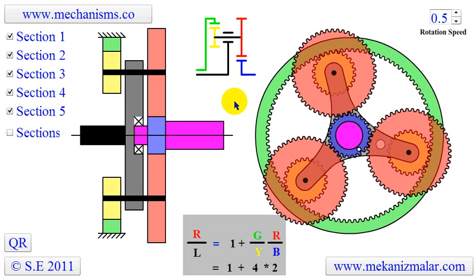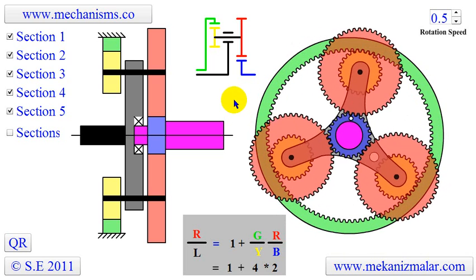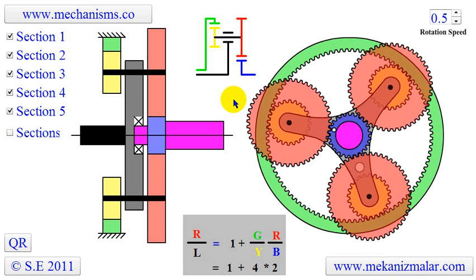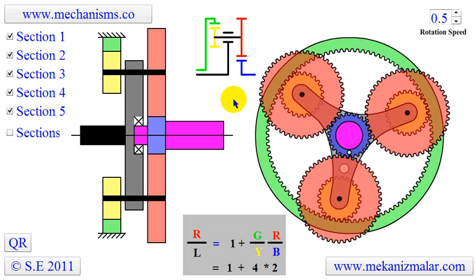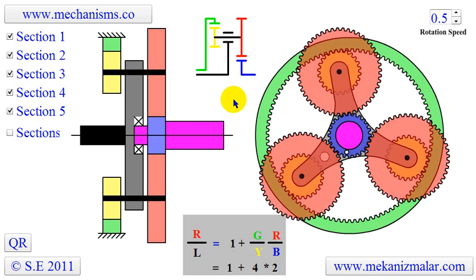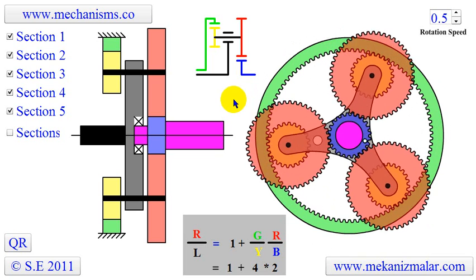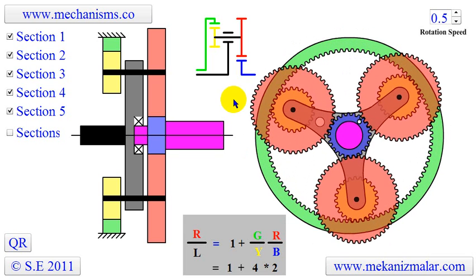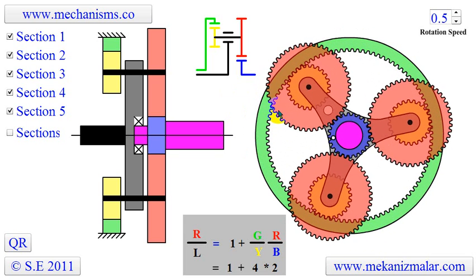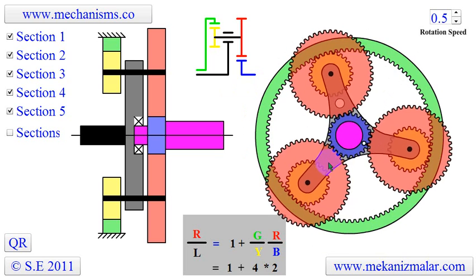The advantages of a planetary gear over parallel axis gear are compact size, higher efficiency, and low noise level. The planetary gearbox arrangement also creates greater stability due to the even distribution of mass and increased rotational stiffness.